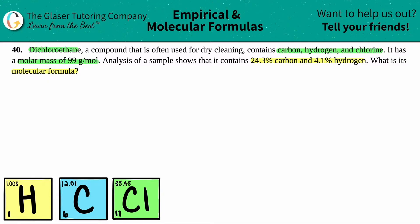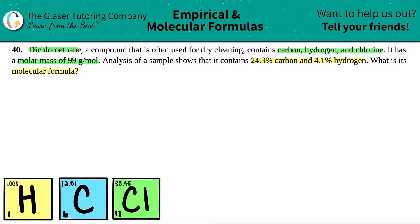Basically we just have to find out what the molecular formula is of this compound called dichloroethane. They gave us a little bit of a hint — they gave us the percent compositions. From a percent composition, we can always find the empirical formula, and then from there we can find the molecular formula. There's a four-step process to find an empirical formula and then just a quick one-stepper to get to the molecular formula.